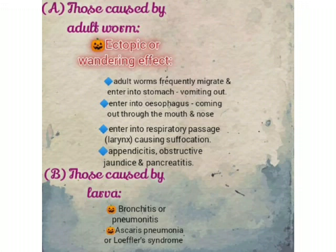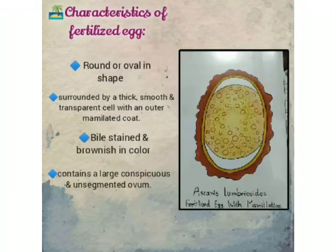Ectopic or wandering effects: the adult worm frequently migrates and enters the stomach and is vomited out. If it enters the esophagus, it will come out through the mouth and nose. If it enters the respiratory passage, it will cause suffocation. It also causes appendicitis, obstructive jaundice, and pancreatitis. Those caused by larvae include bronchitis, pneumonitis, and Ascaris pneumonia.